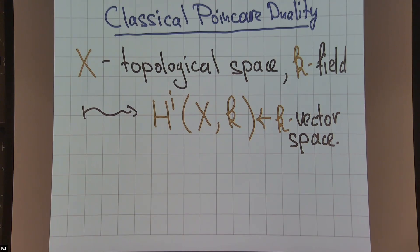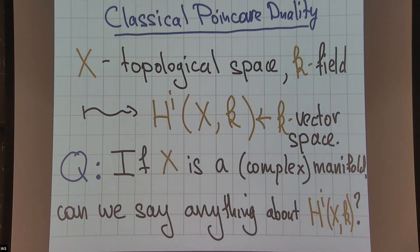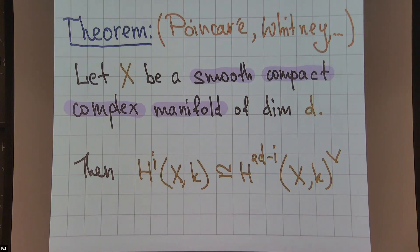What will be important for the first part of the talk is the case of complex manifolds. It's a question of whether we can say anything useful about these spaces and these groups. I want to concentrate on Poincaré duality. It says that if you have a smooth compact complex manifold of dimension d (here by d I mean complex dimension), then there is a duality between H^i and H^(2d-i).